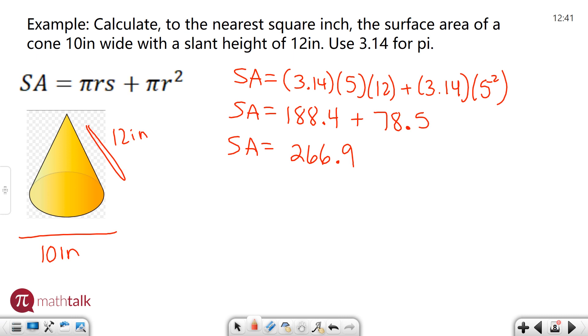Surface area equals 188.4 plus 78.5 should get you 266.9. And again, we want to make sure that we fully read the question and also include our units. So in the example, they say calculate to the nearest square inch. So we have a number that's close to a whole number. In this case, we're going to round up to 267 inches. And because we're talking about area or surface area, it's always squared. So 267 square inches or inches squared.